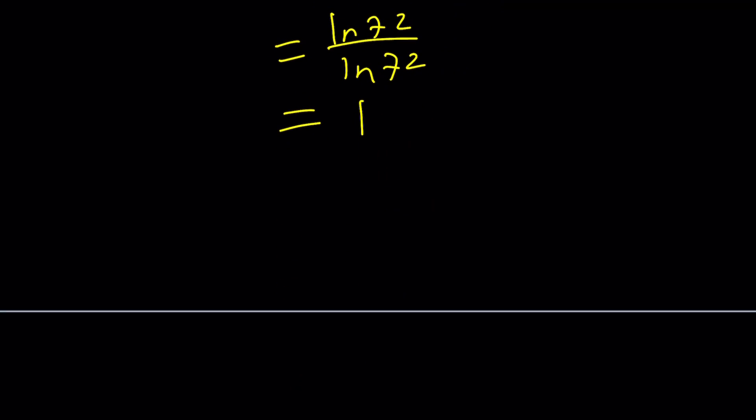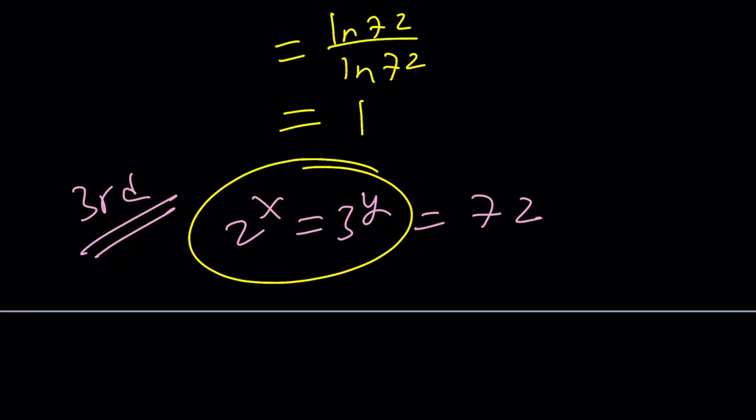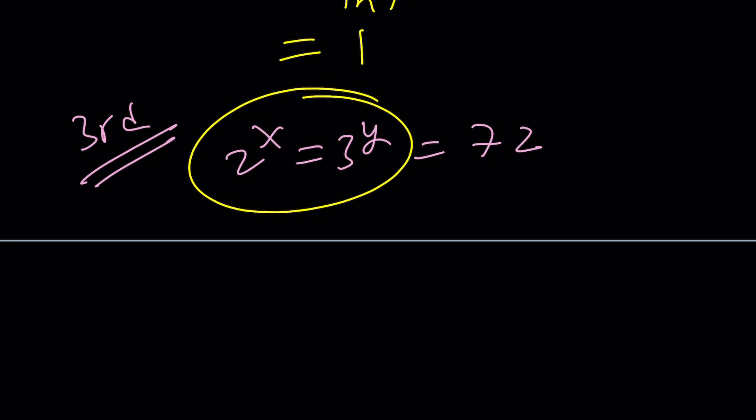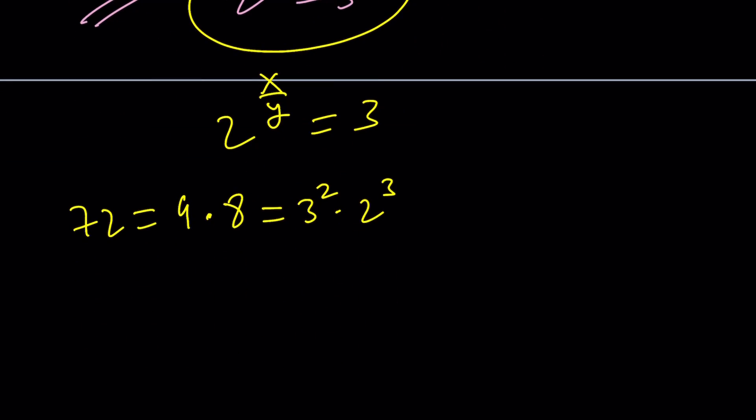Let's go ahead and take a look at the third method real quick. And then we'll be finished. So 2 to the x equals 3 to the y equals 72. Let's go ahead and focus on these two first. Let's go ahead and divide the exponents by y on both sides. That way, we're writing one of them in terms of the other. Now, I'm going to start with 72 and write it as 9 times 8. This method looks like the first method, but it's different, I think. Anyways, replace 9 with 3 squared and 8 with 2 to the 3rd. In other words, prime factorization. At this point, replace the 3 with 2 to the power x over y.